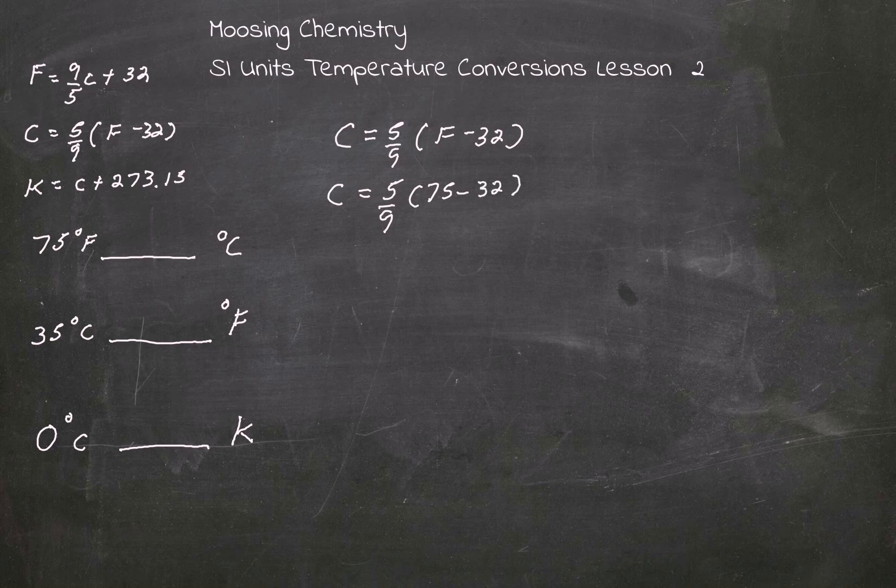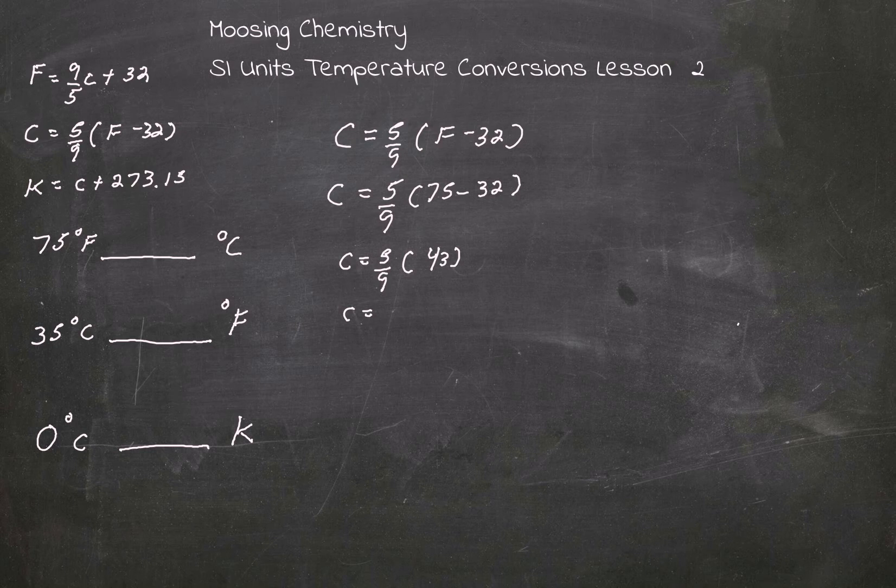Let's turn our calculator on. This gives me C equals 5 over 9 times 43. C equals 23.89 degrees Celsius. We use the degree mark when we're talking about Celsius.